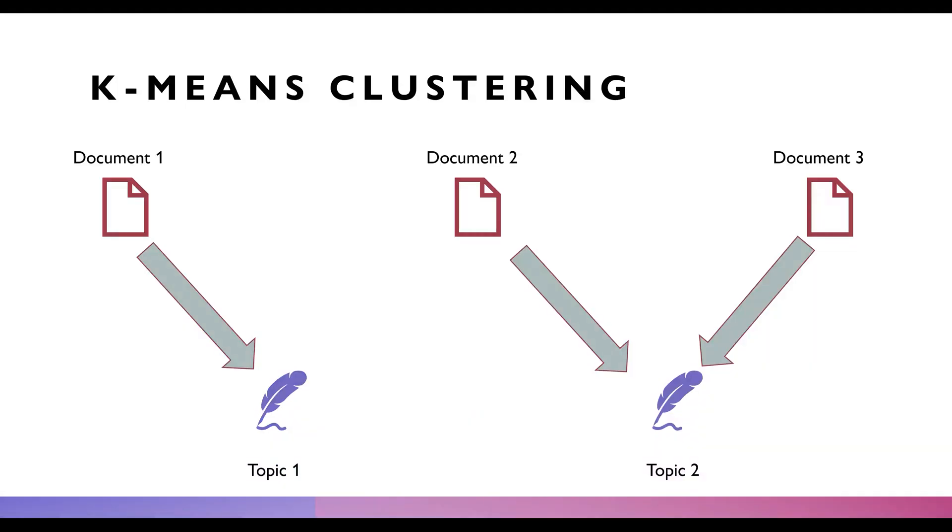In the last few videos, we looked at k-means clustering. K-means clustering looks something like this: Imagine you have three documents, and you tell the system to cluster everything into two topics. Document one goes to topic one, document two goes to topic two, and document three goes to topic two.